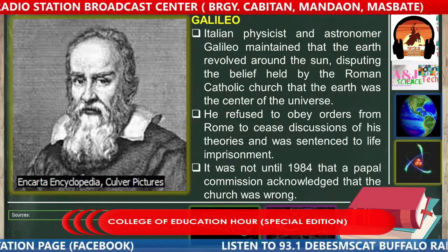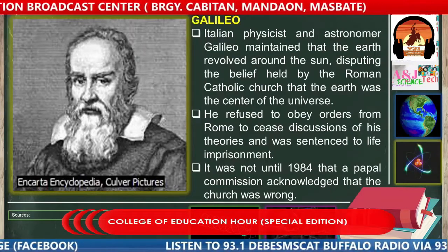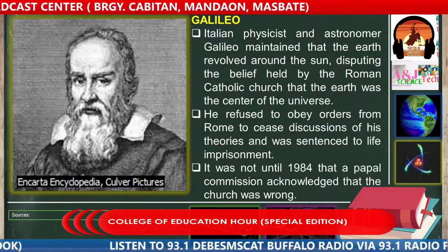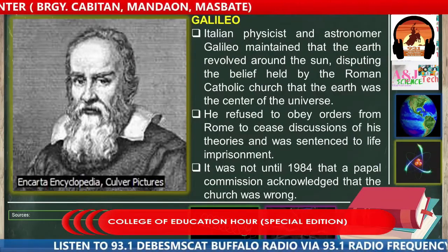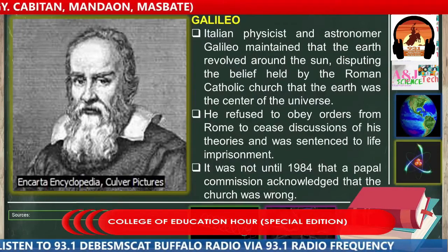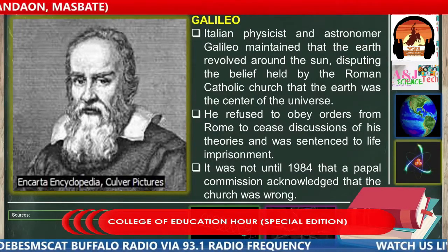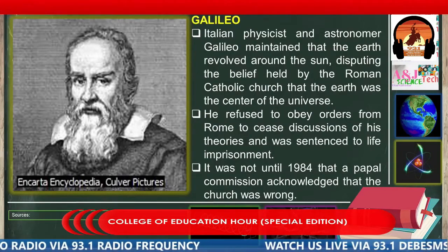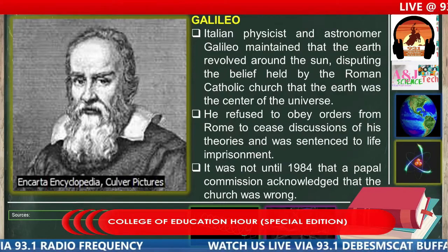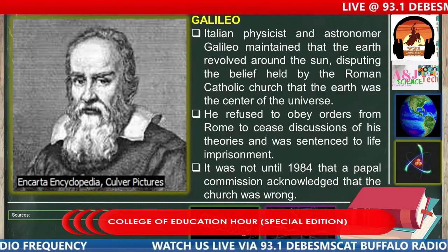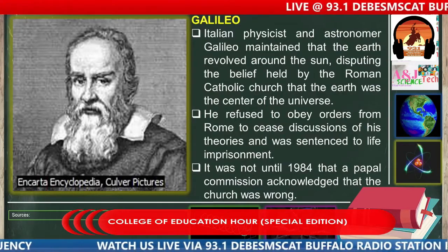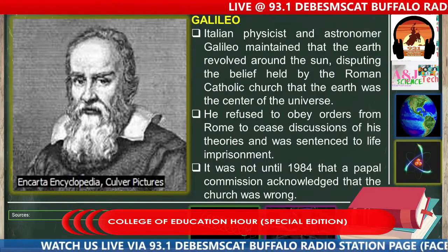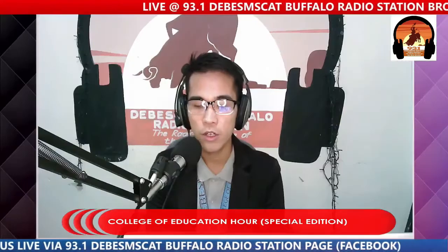Galileo refused to obey orders from Rome to cease discussions of his theories and was sentenced to life imprisonment, because his discovery attacked the beliefs of the church — his ideas were in accordance with heliocentrism. It was not until 1984 that a papal commission acknowledged that the church was wrong, admitting that it is not the Earth but the Sun that is the center of the universe.